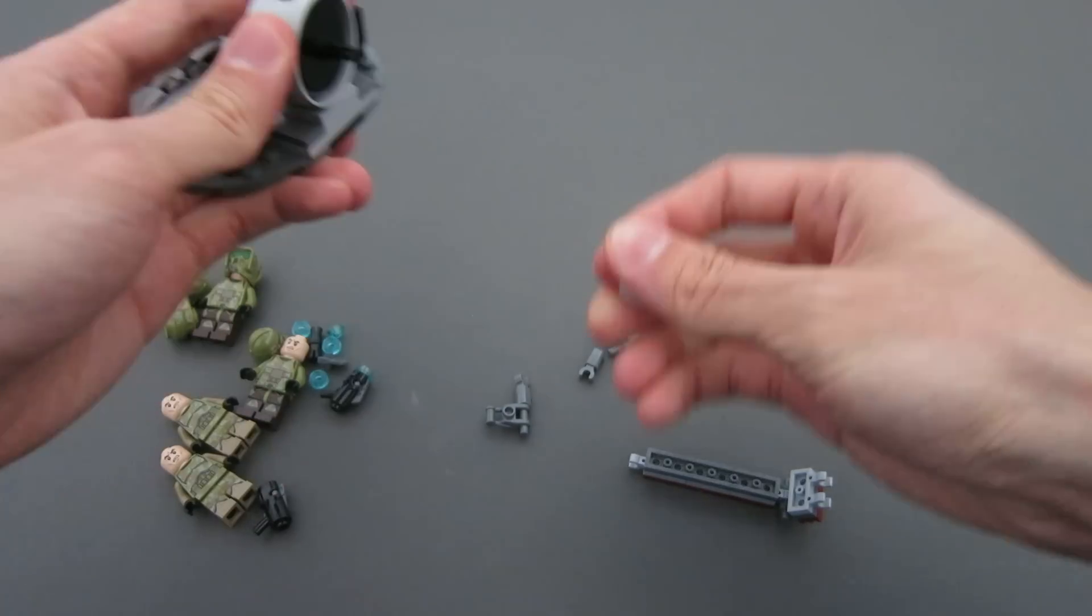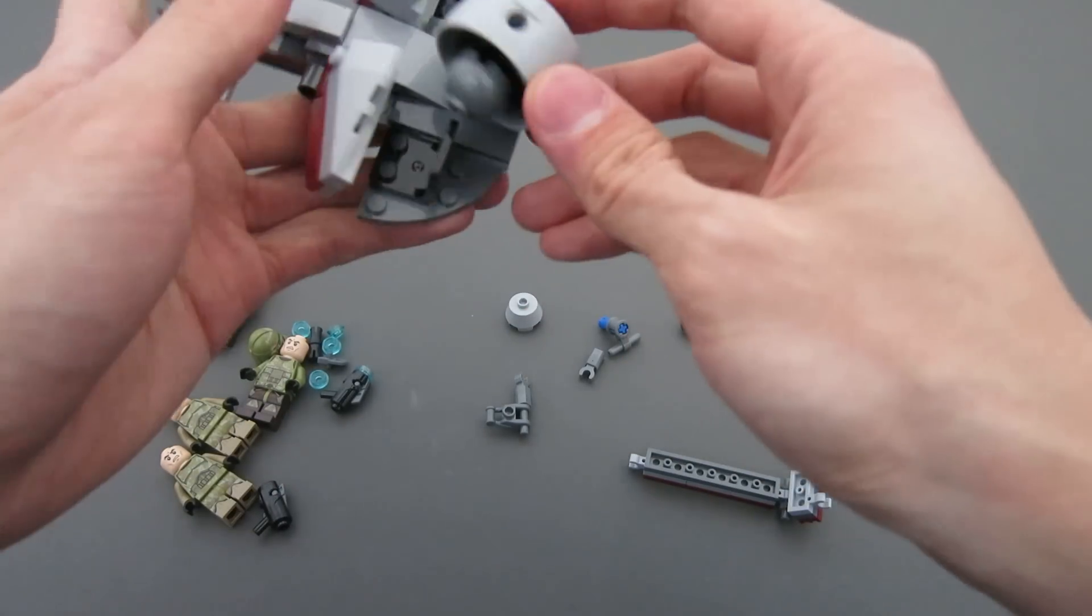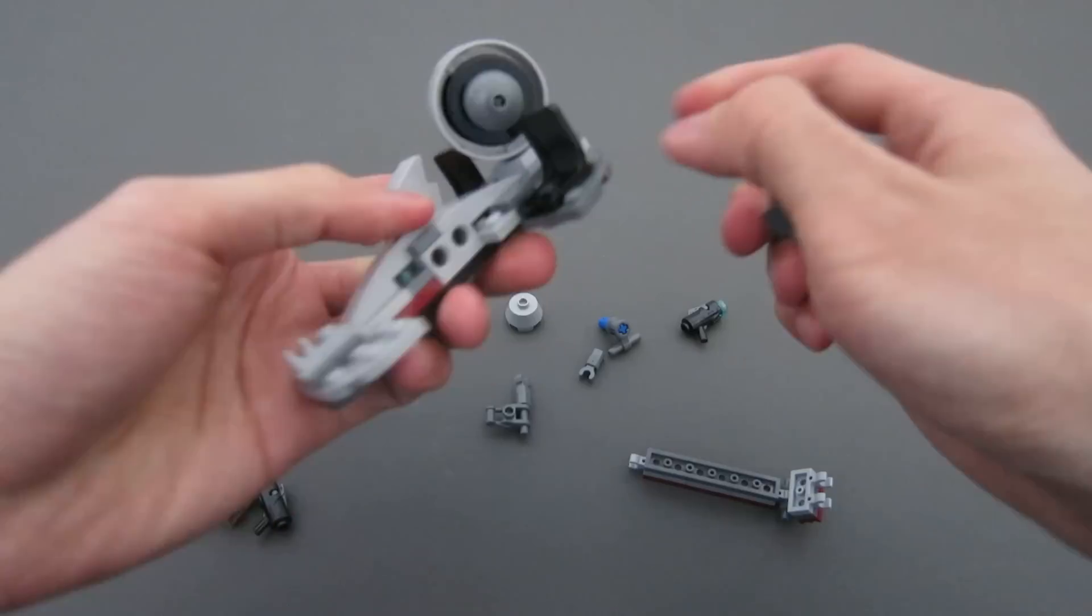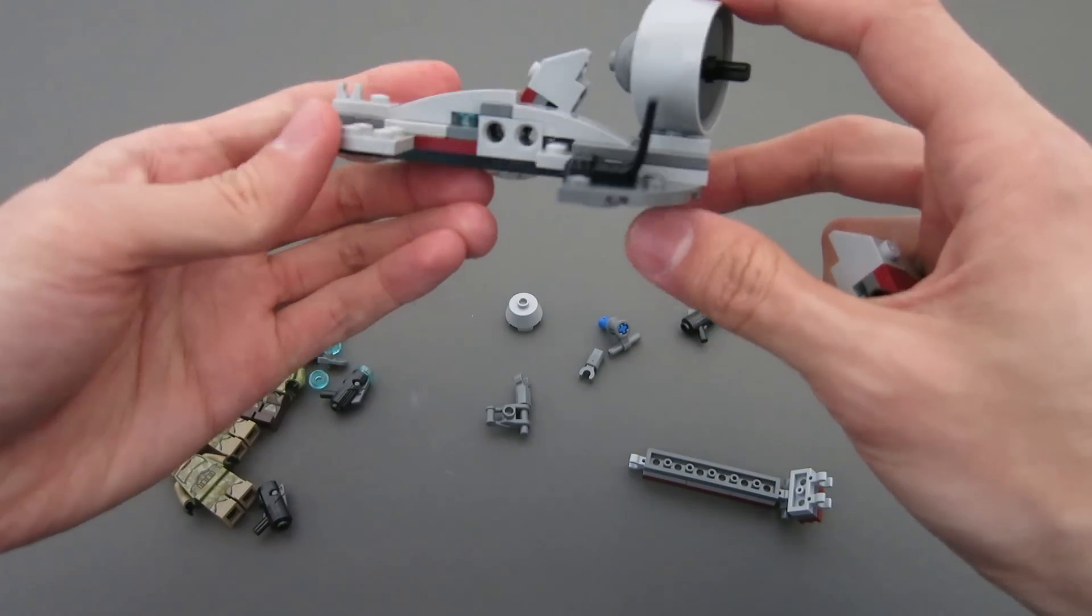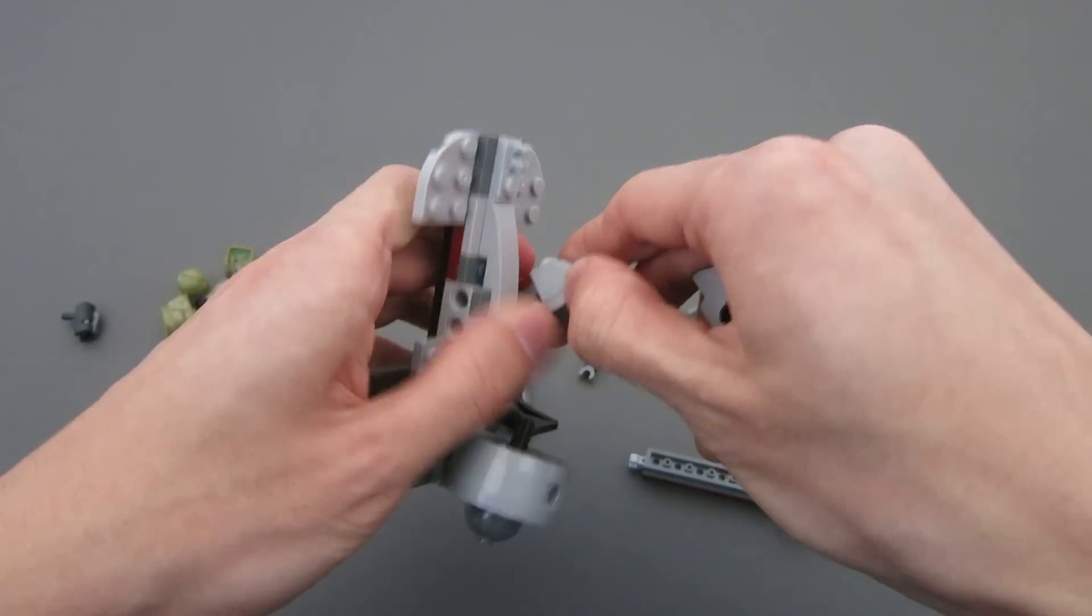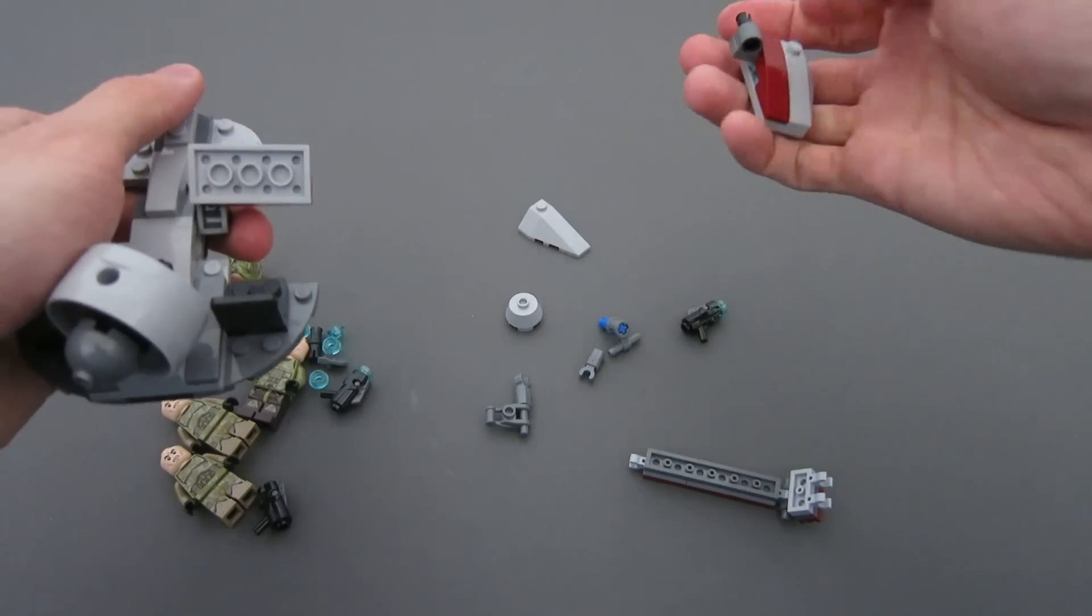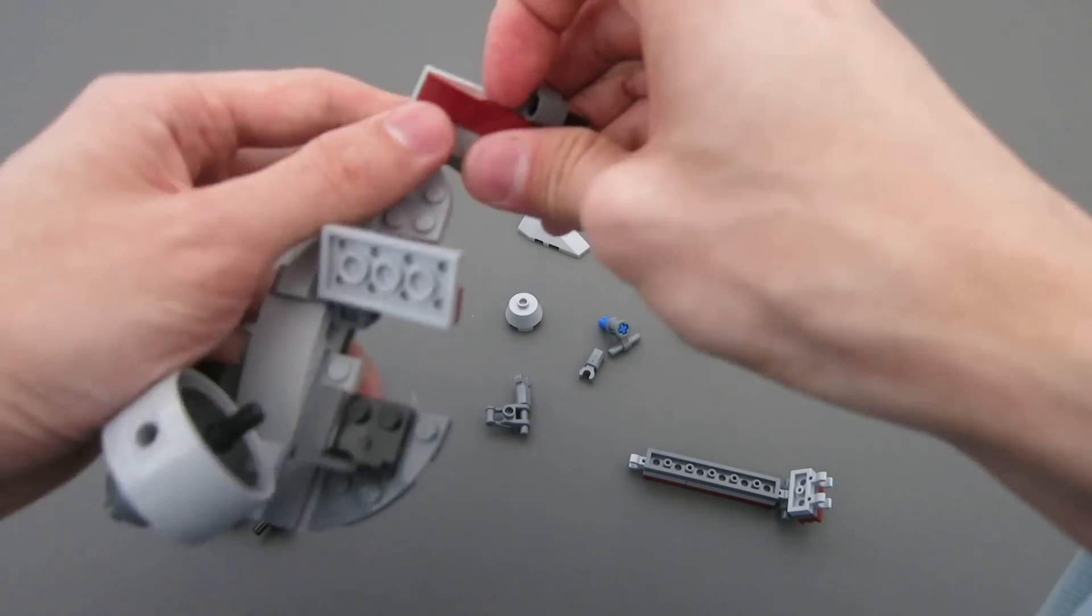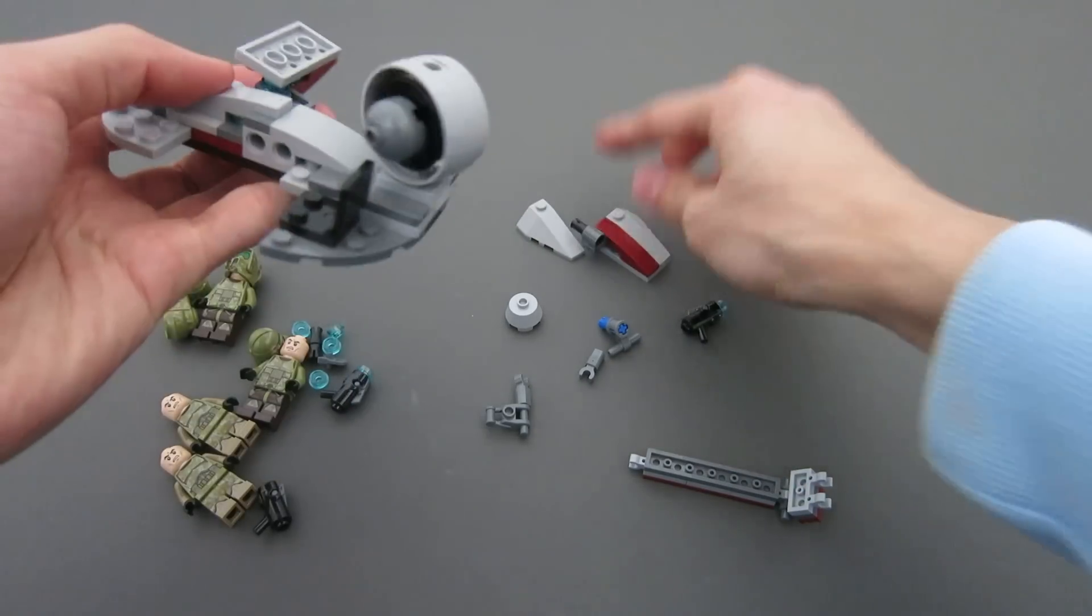And there is an unprinted Astromech Droid head, which is quite useful and pretty rare. It's got a 2x4 curved slope right there, which is useful. And I do like these, the wedge slopes, which I haven't seen in too many sets that are undecorated and unprinted. And, of course, it has a dark red 1x4 curved slope.